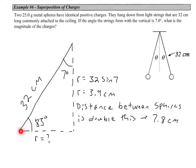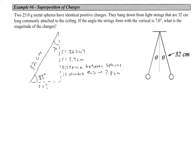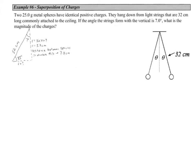Looking at just one of those spheres hanging along the string, with a 7-degree angle at the top, using trig we can figure out that the distance from the centerline between the two spheres to one sphere is 3.9 centimeters. The distance between the spheres is double this, so 7.8 centimeters — that's the r we'll use in Coulomb's Law.